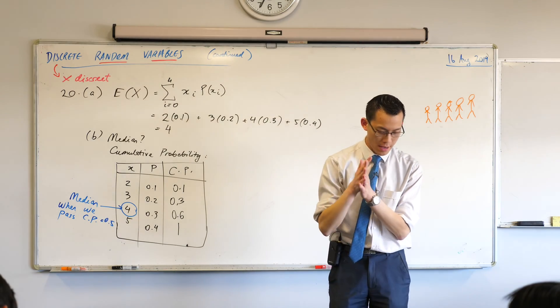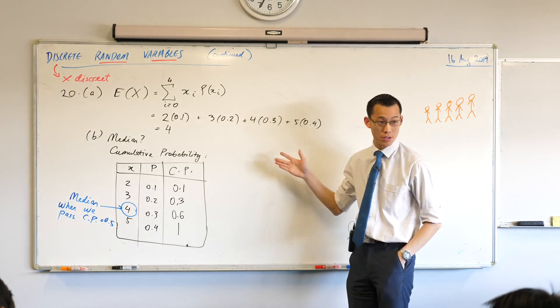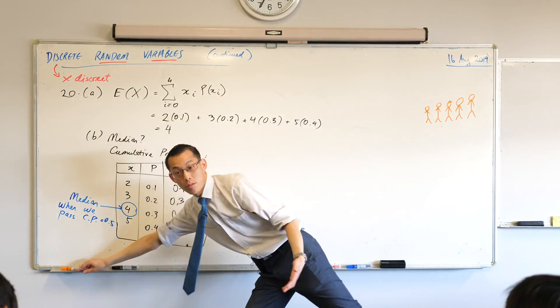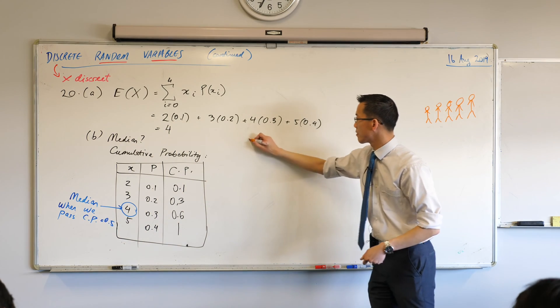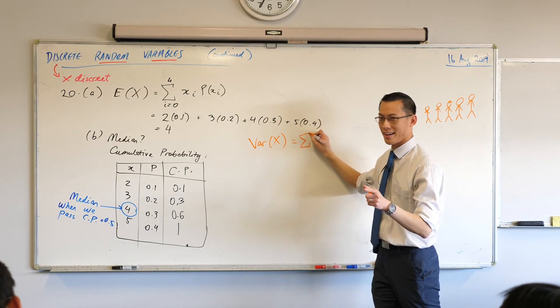I want to see if you can remember this next bit. Part C says calculate the variance of this distribution. We needed the expected value to calculate variance. Can someone remind me? If I want to work out the variance of this distribution, I'm going to add up more things. What am I going to add up?